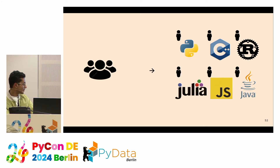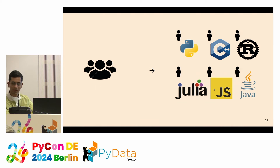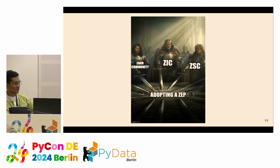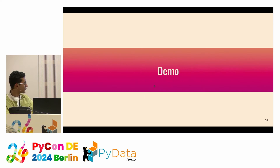How do you adopt a ZEP? We have representation from every other software — those are our steering council — and everyone gets to vote on whether a feature should be enabled or added. Once consensus is reached, the ZEP is adopted.